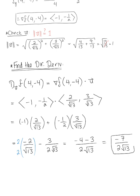So this is our directional derivative — the slope of the surface f at the point (4, -4) in the direction of vector u.